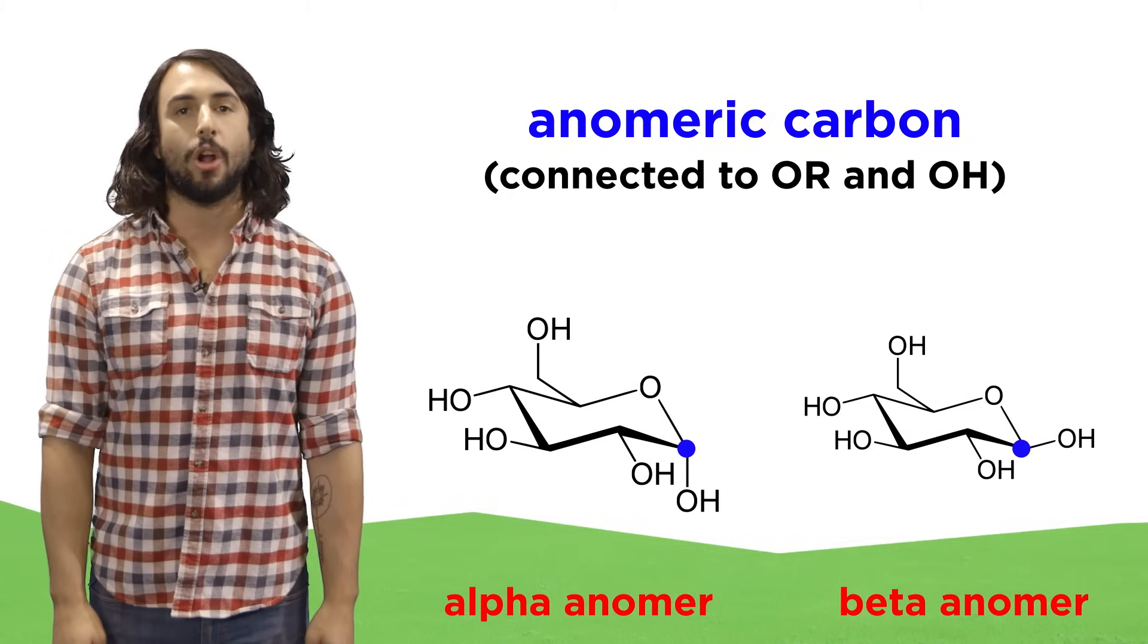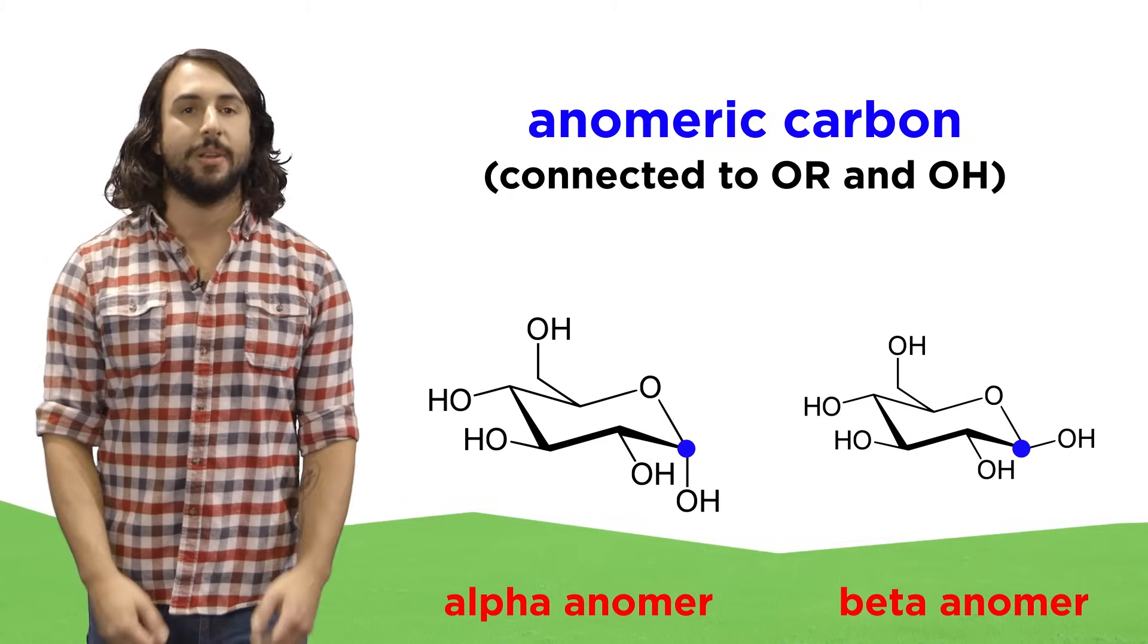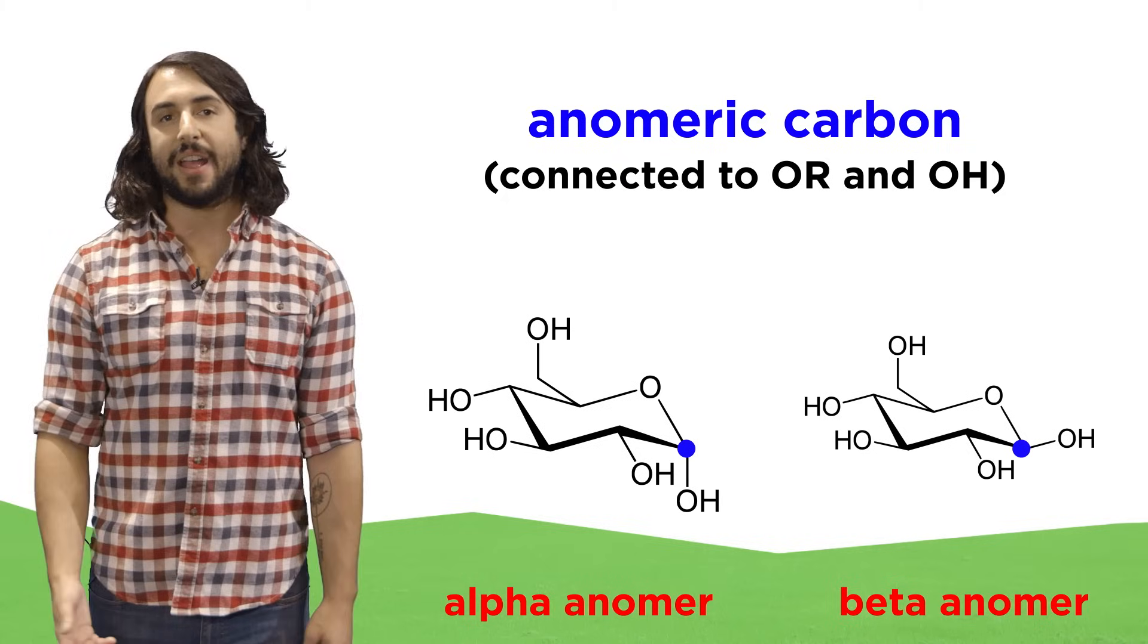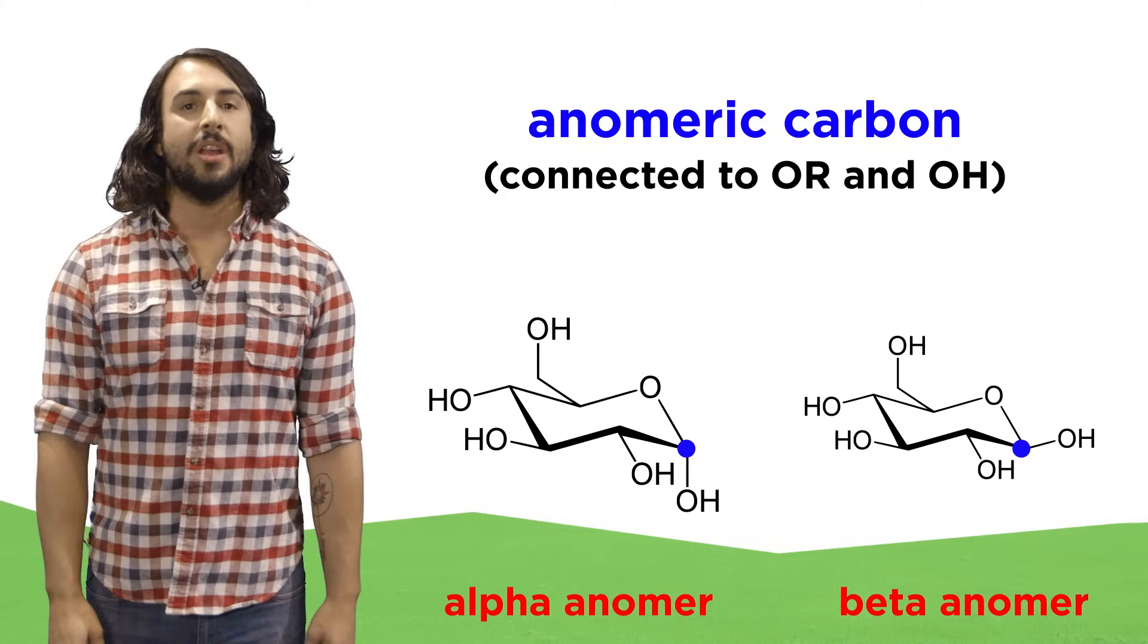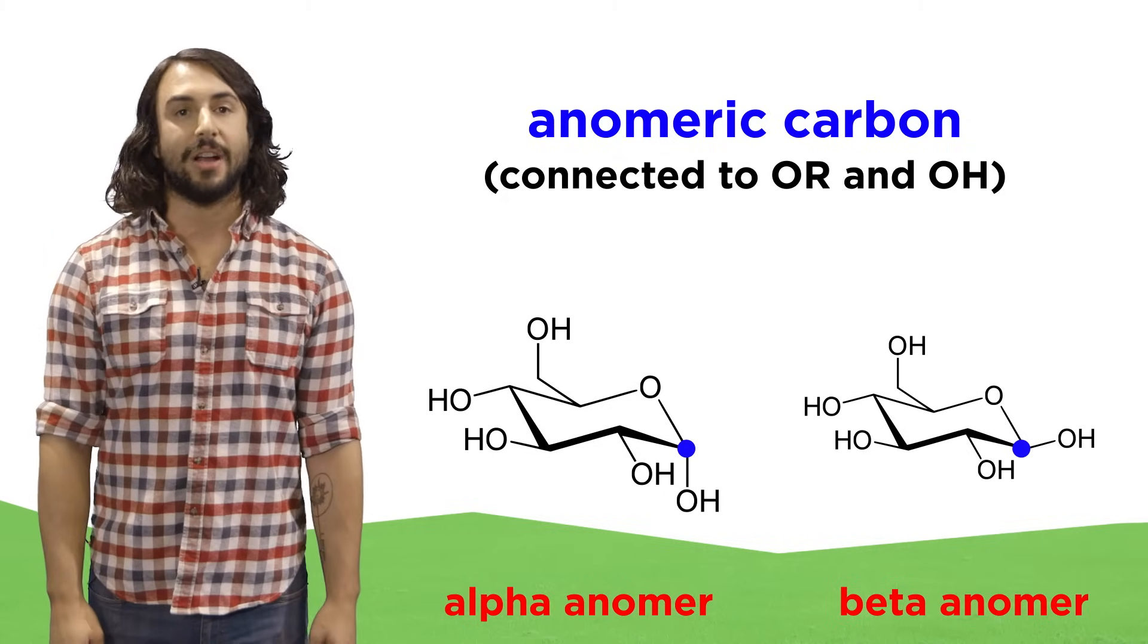That makes the resulting hemiacetal carbon the anomeric carbon, because we can either get the alpha anomer or the beta anomer, depending on which side the hydroxyl attacks from.